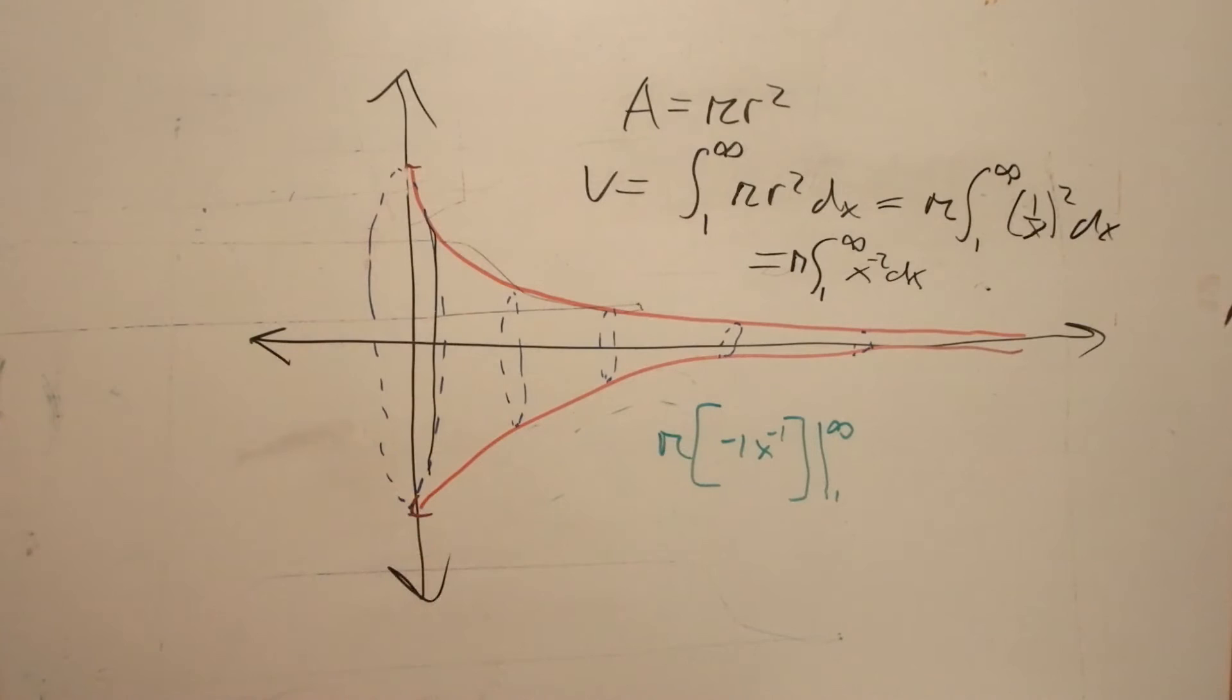So here we're going to use the fundamental theorem of calculus, and we're going to plug in our bounds. And then we'll notice that we get 1 over infinity. And at first this is weird, but 1 over infinity is going to be 0, because it gets so infinitely small that it has no real value. Then we're going to notice the double negative here, leaving us with just π.